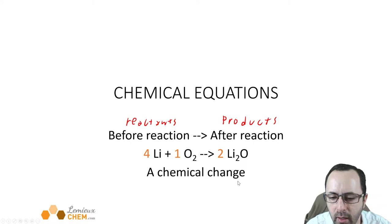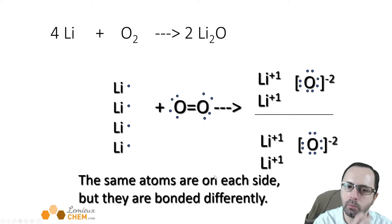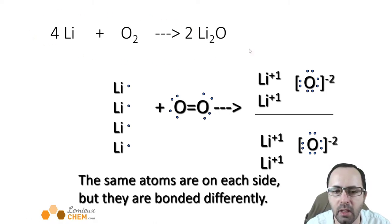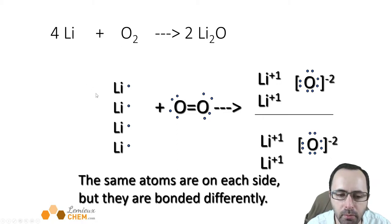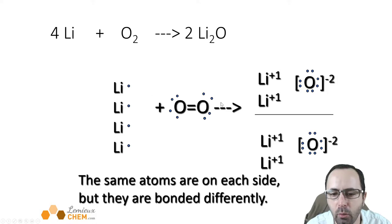What is going on when the chemical reaction happens? And what are these numbers in orange? We have the same reaction copied down here. The four written in front of the lithium atoms indicates that we have to start with four lithium atoms, represented by their Lewis structure with a dot — lithium being group one has one dot. Then for oxygen, we have the Lewis structure of the oxygen molecule.